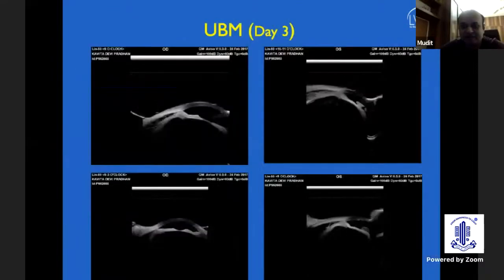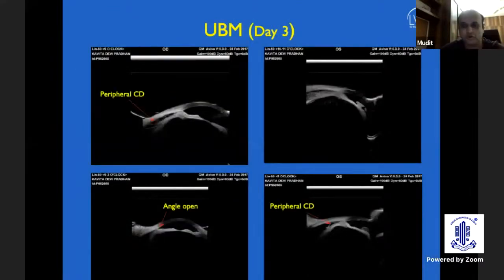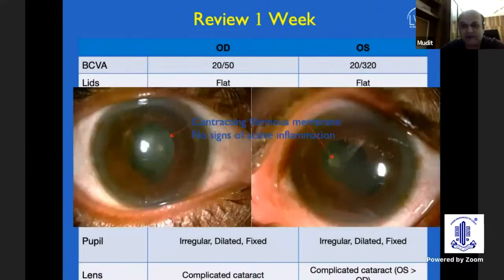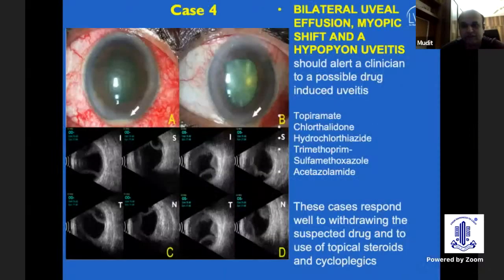We discontinued topiramate, started the patient on topical steroids and cycloplegics, and within just 3 days, vision improved to 20/60 and 20/200 in both eyes. The fibrin membranes started regressing, pupillary and iris details became visible, corneal edema regressed, and the choroidal detachments started regressing. At one week, most of the inflammation had resolved.